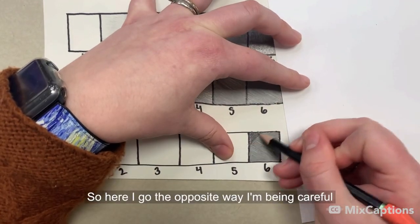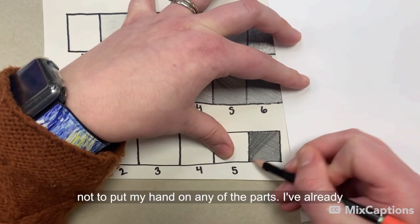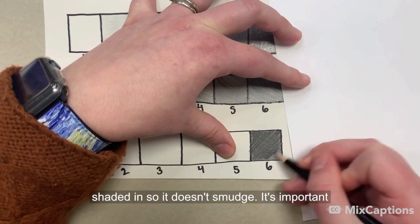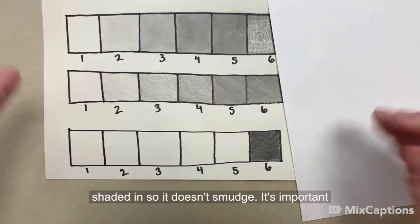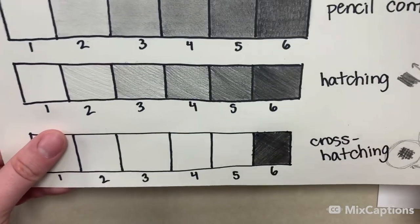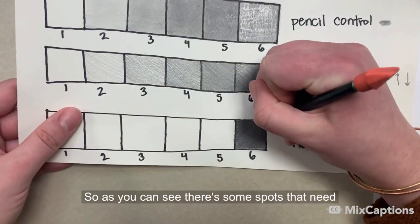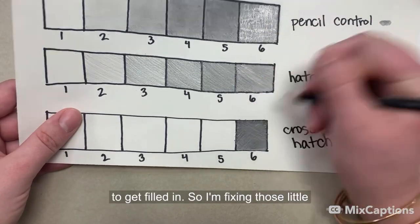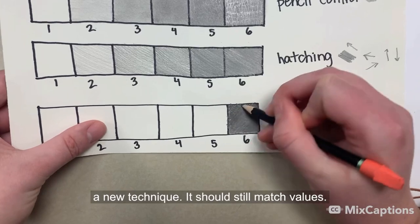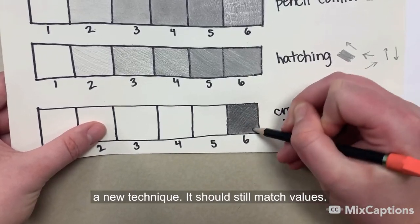So here I go the opposite way. I'm being careful not to put my hand on any of the parts I've already shaded in so it doesn't smudge. It's important to keep good craftsmanship even when we're practicing. So as you can see, there's some spots that need to get filled in. So I'm fixing those little areas here, because again, even though it's a new technique, it should still match values.